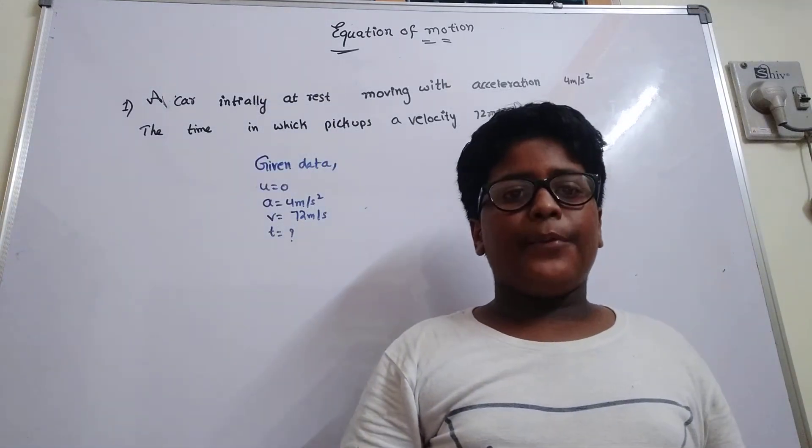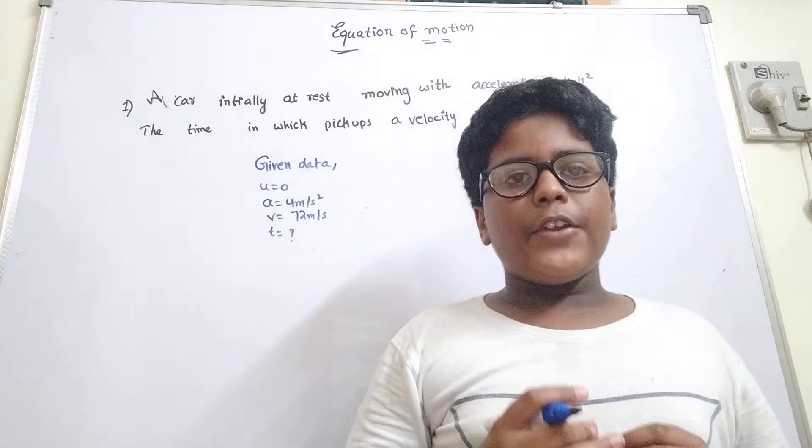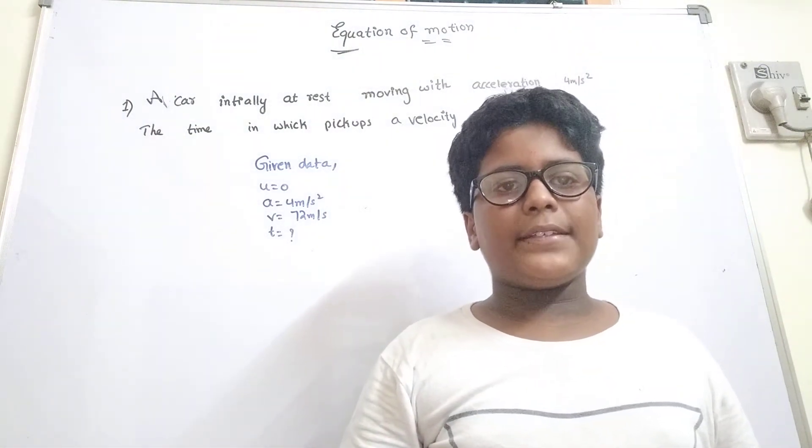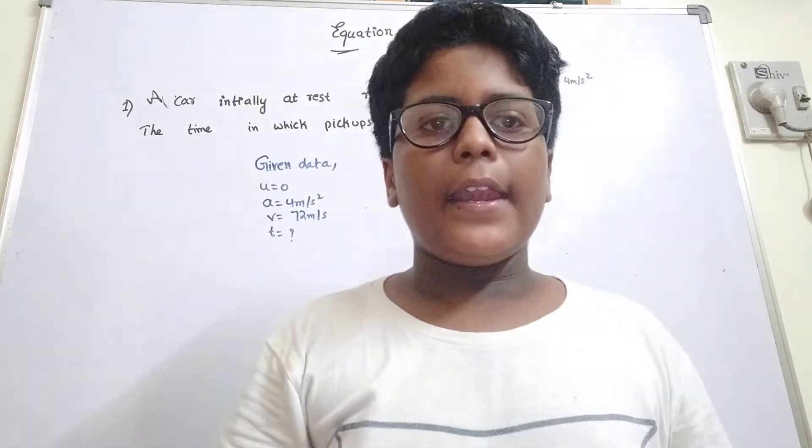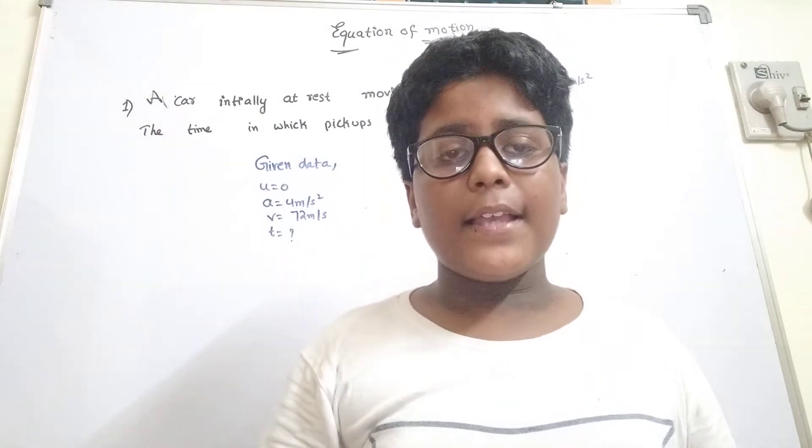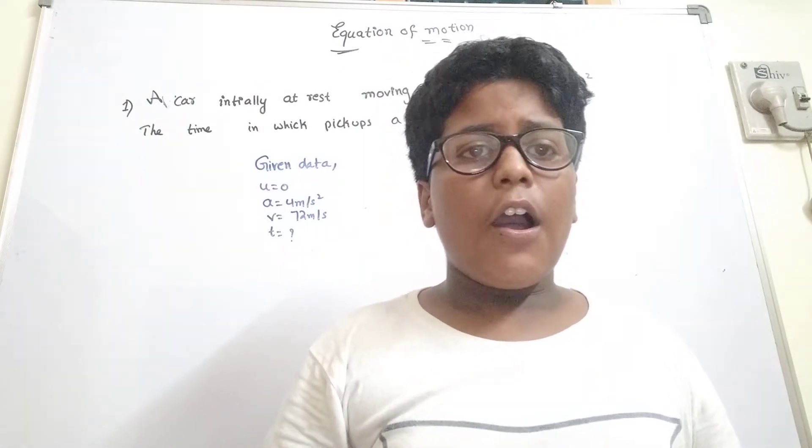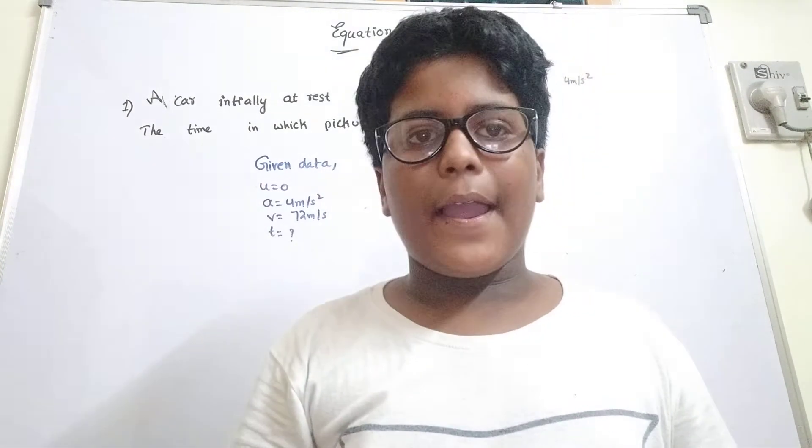I told in before video, there are 4 types of equations. V equals to U plus A T. S equals to U T plus half A T square. And V square minus U square equals to 2 A S. And the last is S N equals to U plus A N minus half.